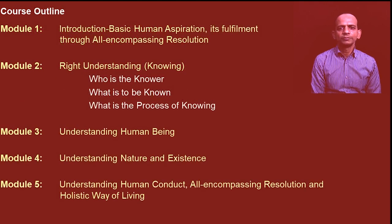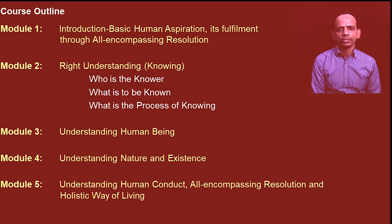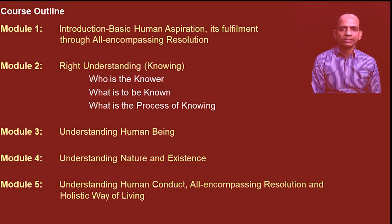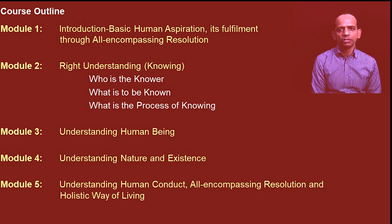If you look at the course outline: Module one is dedicated towards introducing the course — we'll talk about the basic human aspiration and its fulfillment through all-encompassing resolution. In module two, we'll talk about right understanding — we'll be able to see who is the knower, what is to be known, and what is the process of knowing. In module three, we'll discuss the human being in more detail. In the previous course, we talked about some of the activities of the self; now in this course, we'll talk about all the activities of the self and see how harmony can be ensured in the self.